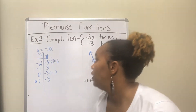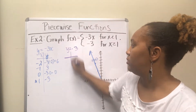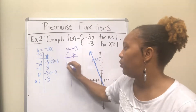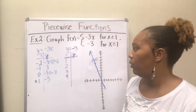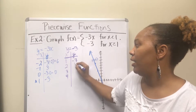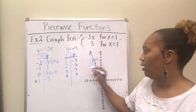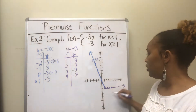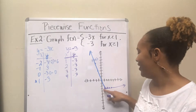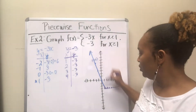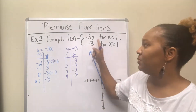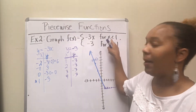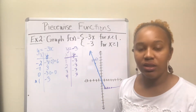The second graph is y equal to negative 3, which is a constant function — there is no x to plug in. The restriction says x is greater than or equal to 1, so I pick x values like 1, 2, 3, 4, and no matter what I plug in, the output is always negative 3. That's a horizontal line. Plotting those points gives a horizontal line starting at (1, -3) with a closed circle, going in that direction. These two graphs together make up the complete piecewise function.